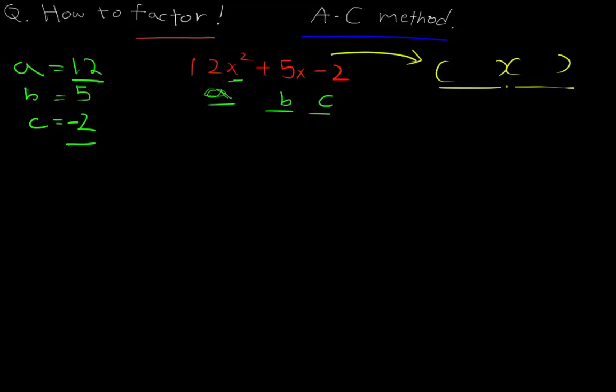Let's do that. What's 12 times -2? Yes, that's -24. What we're trying to do here is find two numbers that multiply together to get -24.